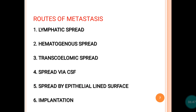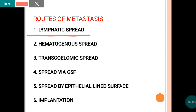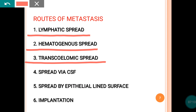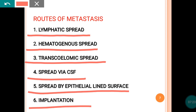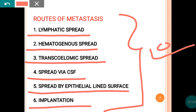Now we will see which are the routes of metastasis. There are six routes of spread by the tumor. The first route is lymphatic spread. The second is hematogenous spread. The third is seeding by the cavity — that is transcelomic spread. The fourth is spread via cerebrospinal fluid. The fifth is spread by the epithelial-lined surface. And the final one is implantation.